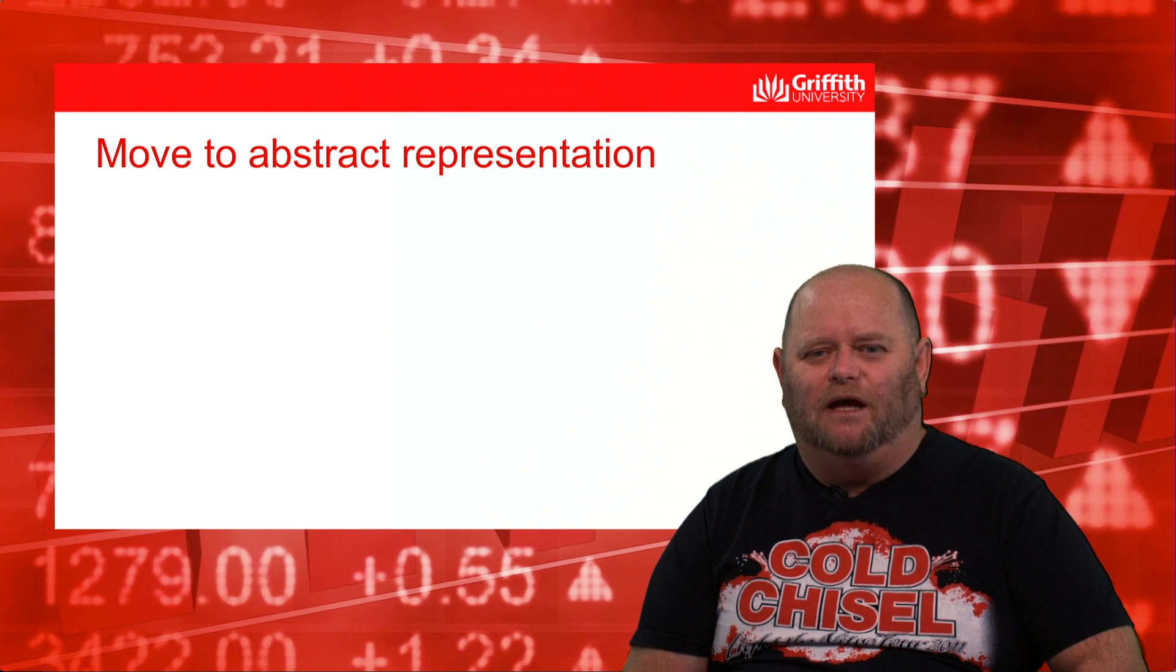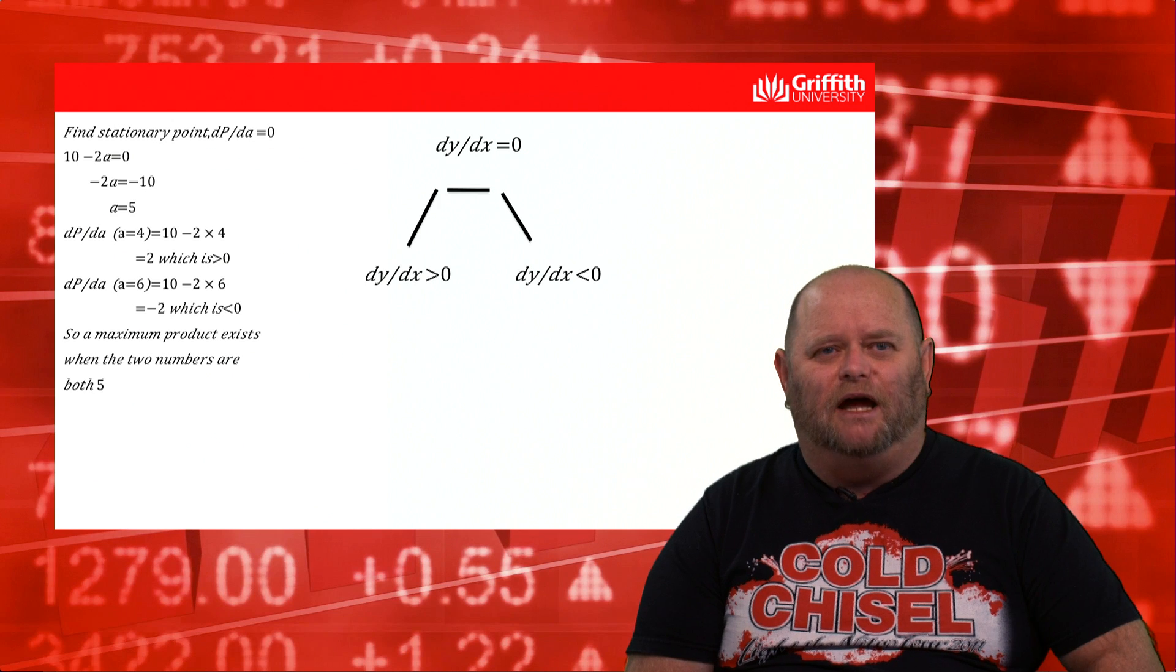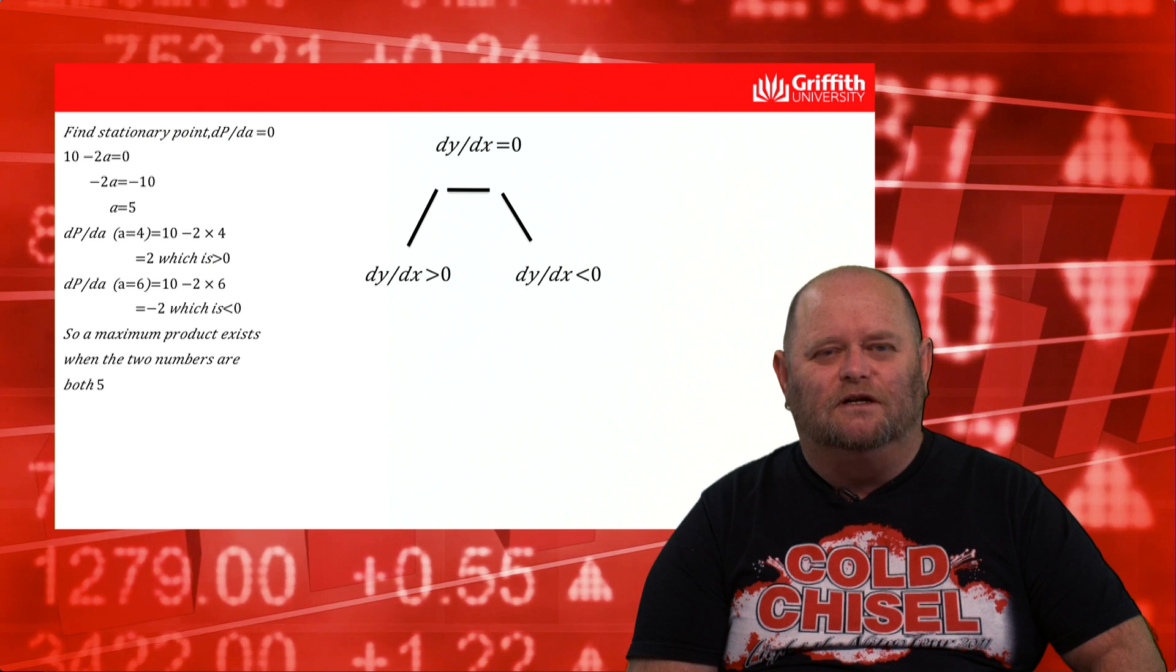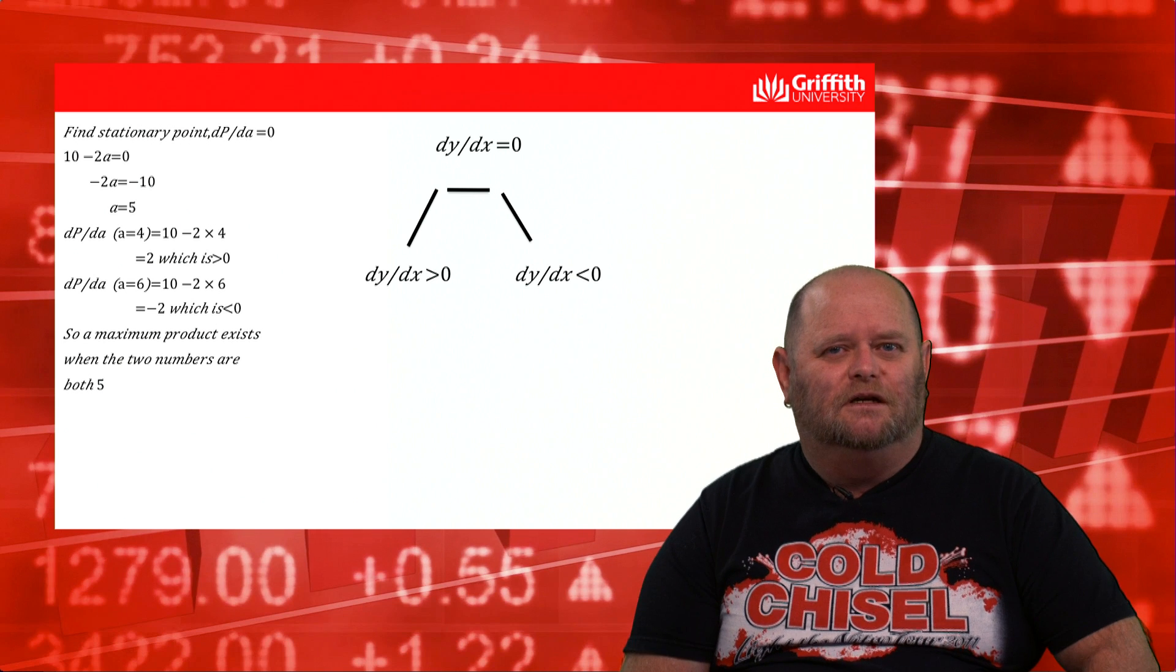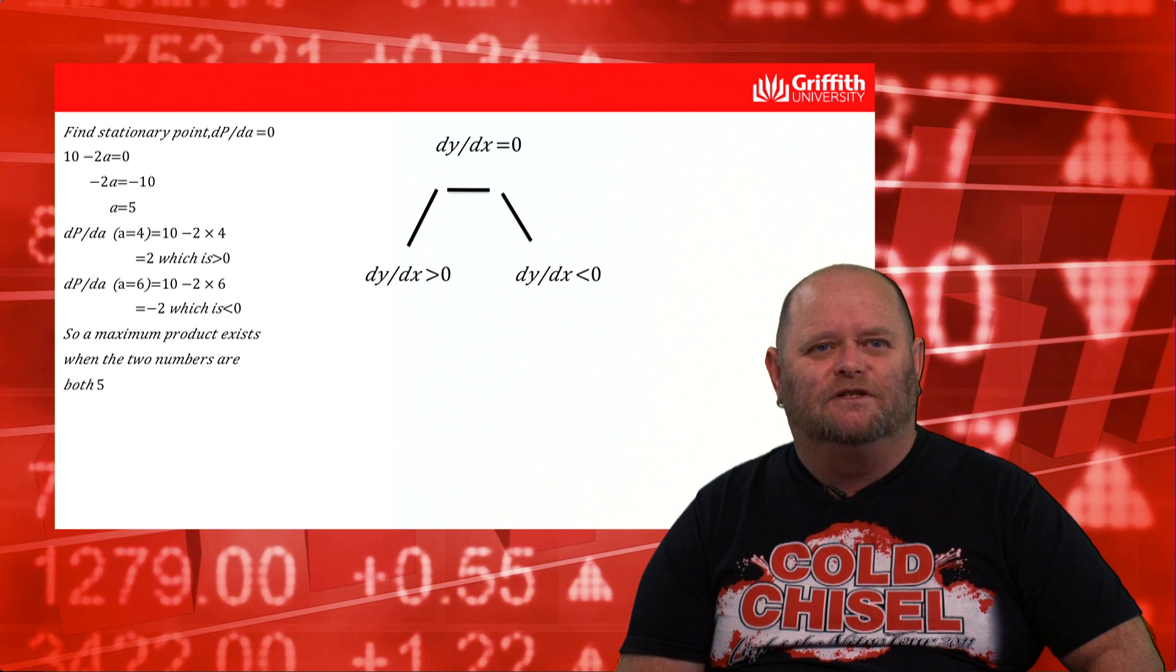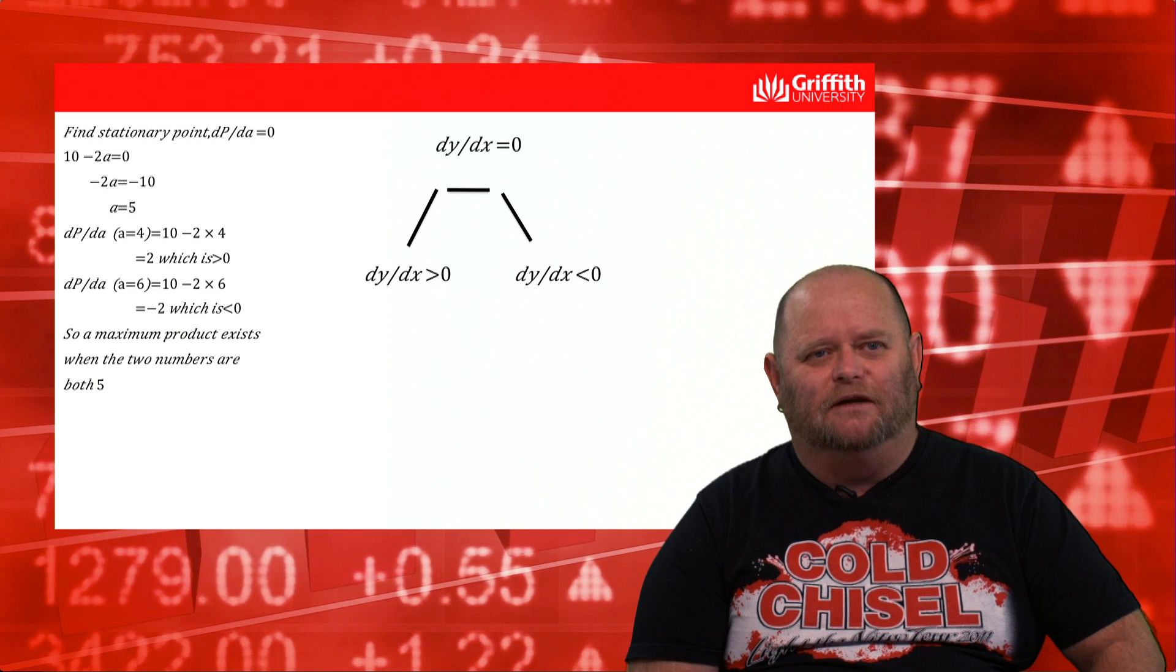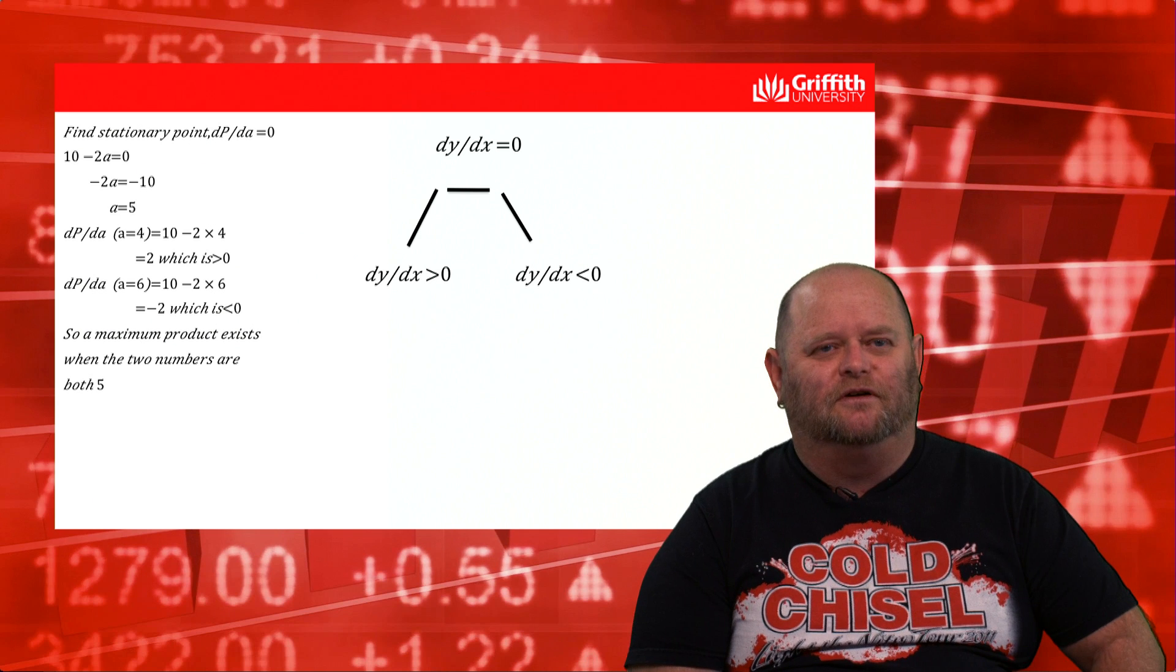If we move to an abstract representation of that same thing, how do we work out that the equation for that function is what it is? Again, would we use pencil and paper techniques? Would we use a graphics calculator to find the regression line? However, we find out that the stationary points are going to occur where the derivative is equal to zero. And we end up with a maximum product where both values are equal to five.